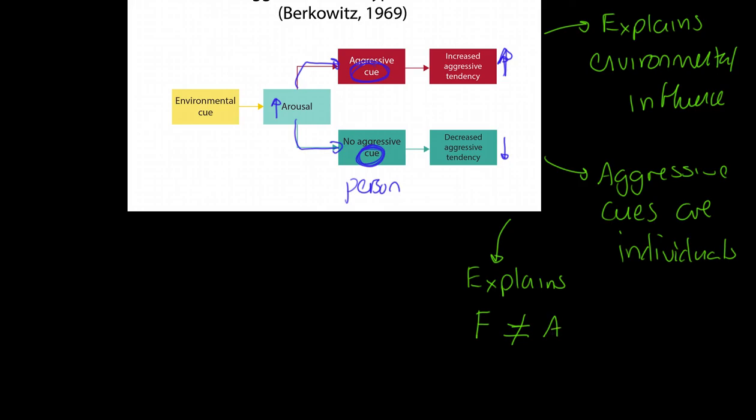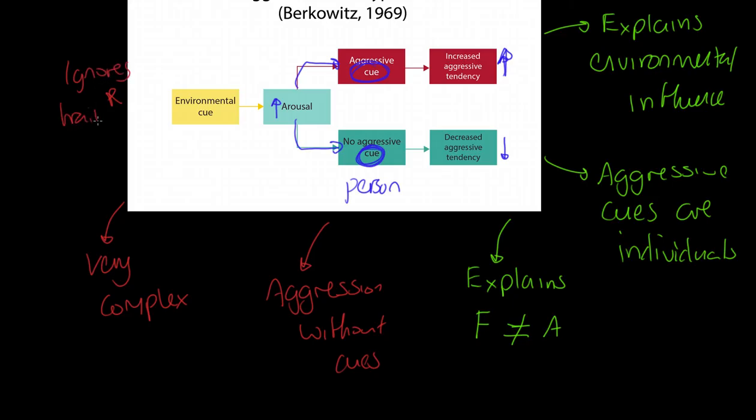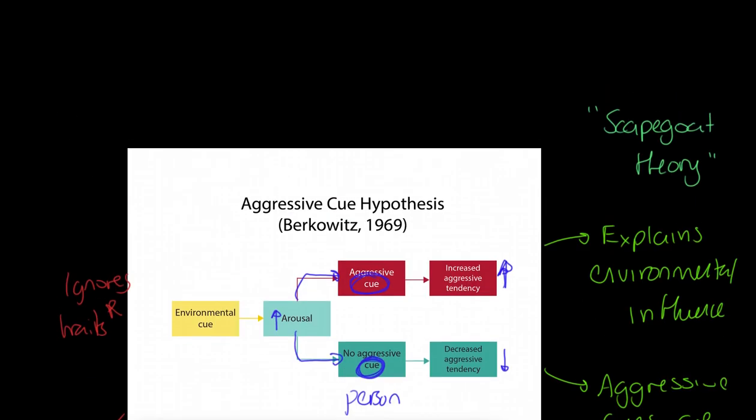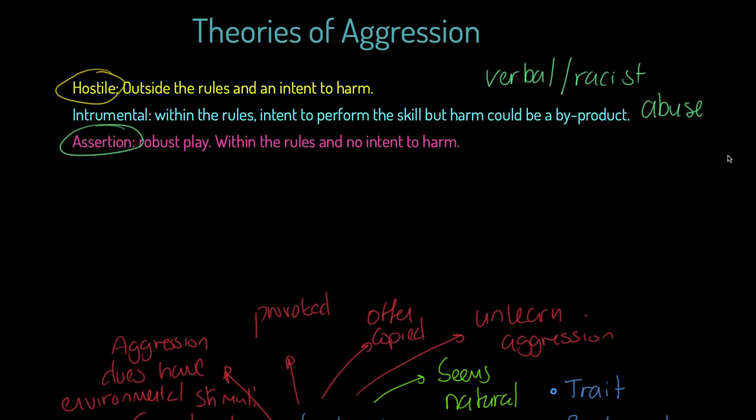But there are problems to this theory. First of all, people do display aggression without cues. Some people just get aggro. Also, it's very complex because you and I are different, our experiences are different, our cues are different. The other thing is it ignores traits. So we've gone through a really comprehensive guide, an evaluative structure for four theories of aggression starting with our different types of aggression at the start. I realize that's a chunky tutorial but it's a content-filled one and highly evaluative. I hope it's useful.